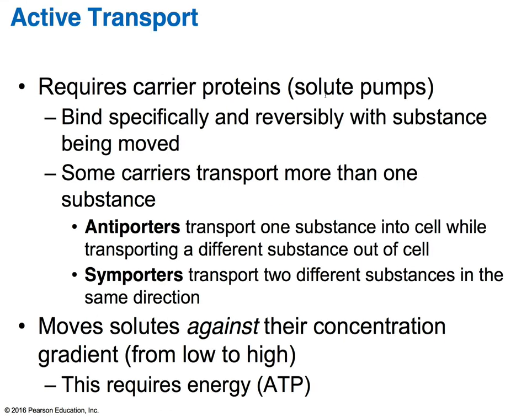Active transport requires carrier proteins that we also call solute pumps. These proteins bind specifically and reversibly with the solutes being moved. Some proteins transfer more than one substance. Symporters transfer two different substances in the same direction, while antiporters transfer one substance into a cell while transporting a different substance out. In active transport, you're moving solutes against their concentration gradient — from areas of low concentration to high concentration — which is why ATP energy is required.